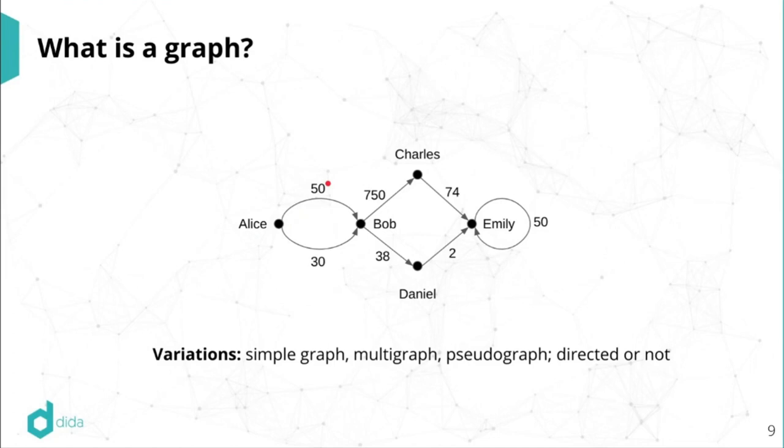And then just as a quick heads up, this is one version, one definition of a graph. There's many variations. If you pick up a random paper, something slightly different might be meant. So maybe double parallel edges like this one are not allowed, or maybe loops are not allowed, or maybe these edges can be considered not to be directed.